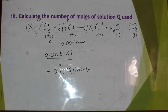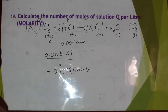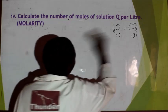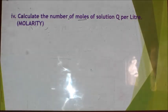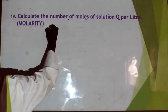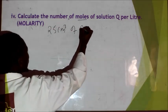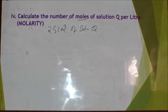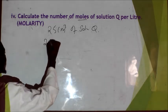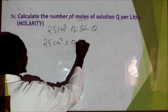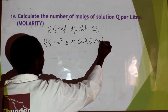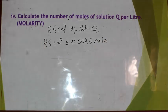That gives 0.0025 moles of solution Q. You have now used the mole ratios together with the number of moles from part 2 to compute the moles of solution Q used in the experiment. The next question asks for moles per liter. In this experiment you used 25 cm³ of solution Q, and those 25 cm³ were equivalent to 0.0025 moles.